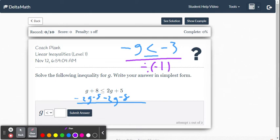This is where the alarms go off in your head. You're multiplying or dividing by a negative number, so now you need to flip the sign. We're going to get positive g, but now it's going to be greater than or equal to positive 3.